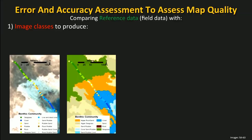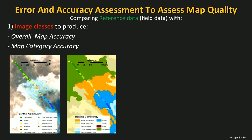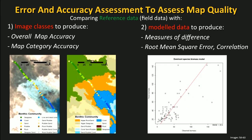The field data is then used for calibration and also for validation — as reference data to assess the quality of the image. For thematic maps, this is expressed as an overall accuracy value, or as individual map category accuracy for each category appearing in the map. For model data, the field data is compared with the modeled data, and measures of difference such as root mean square error are examined.